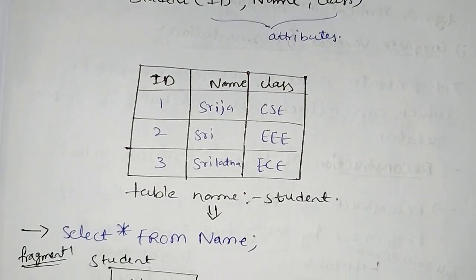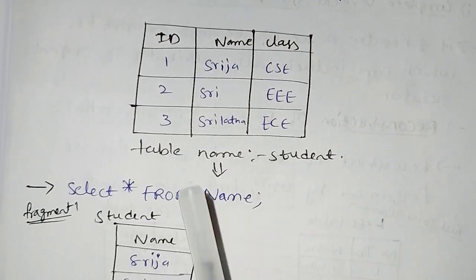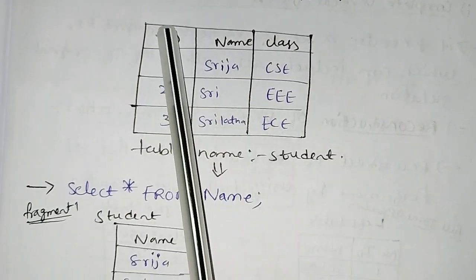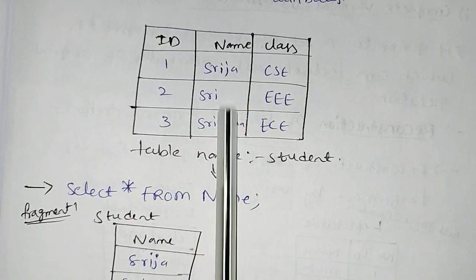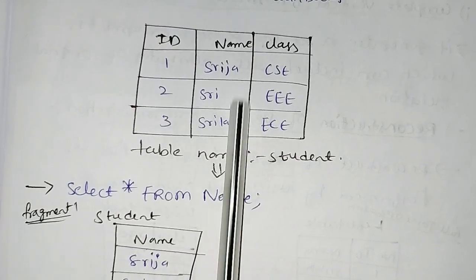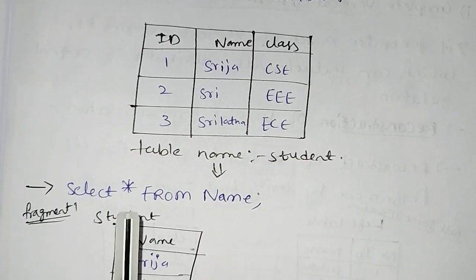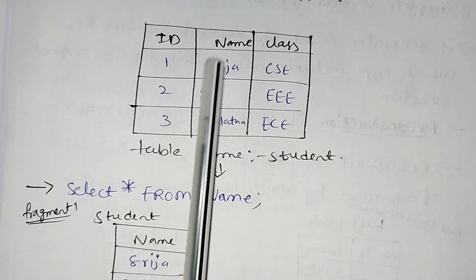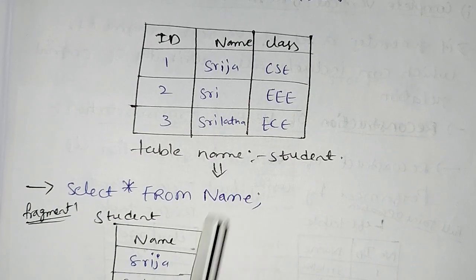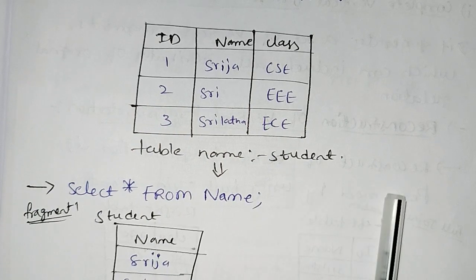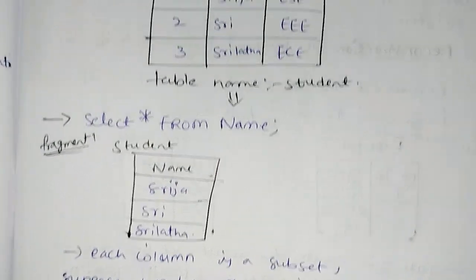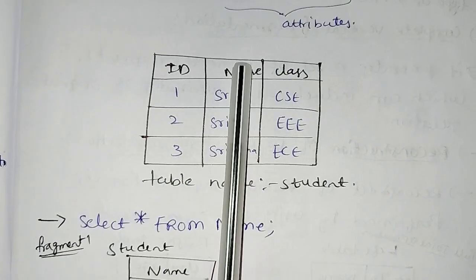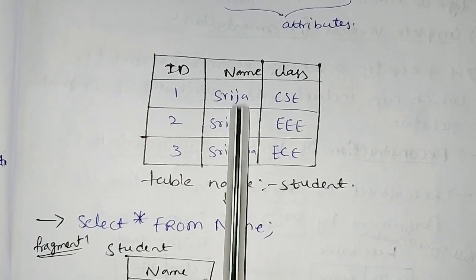This is the student table. In the student table, ID is one column, name is one column, and class is one column — each is one attribute or column. The table name is student. Now let's select a query: select star from name. So name is the attribute we are selecting.